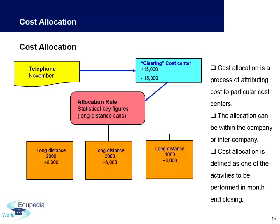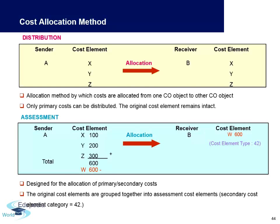Cost allocation is used for internal management reporting to analyze where spending exceeds or falls short of budget. You can also distribute costs from three different cost elements into three completely different ones, or do an assessment where costs from multiple cost elements are combined into one. These methods — distribution and assessment — are key cost allocation approaches.